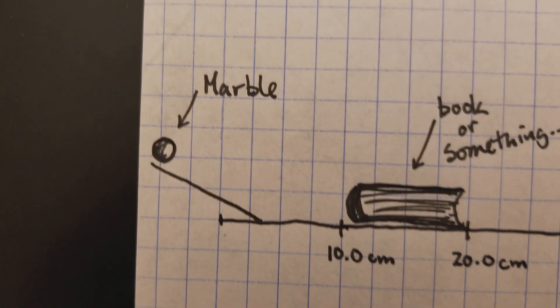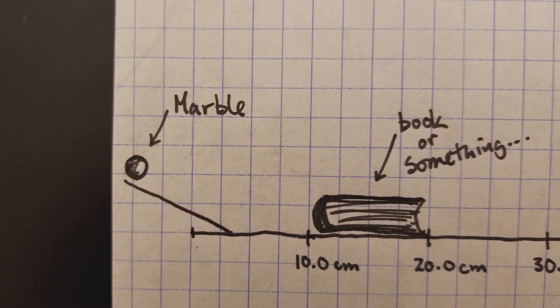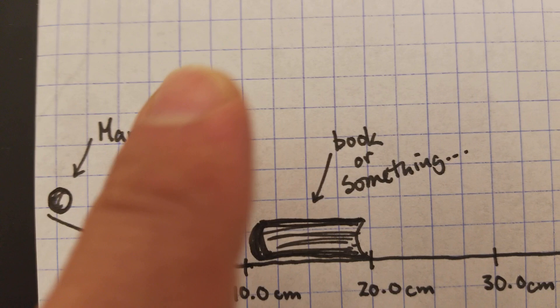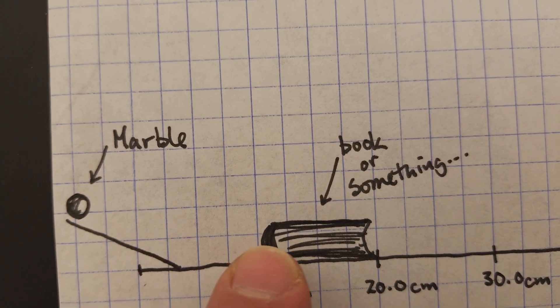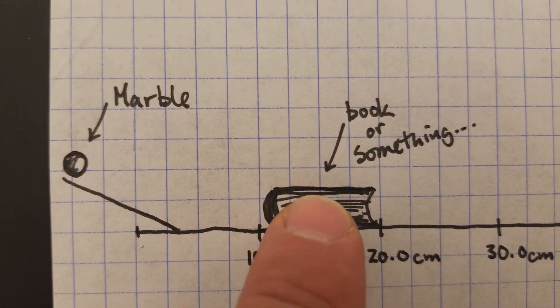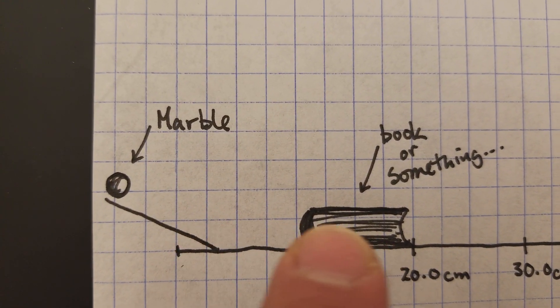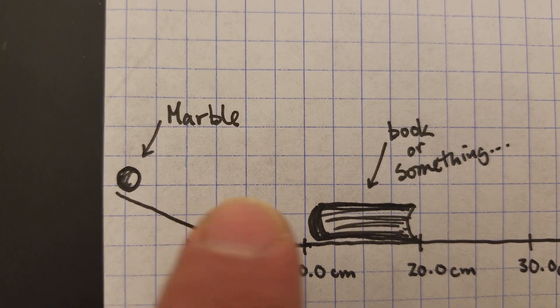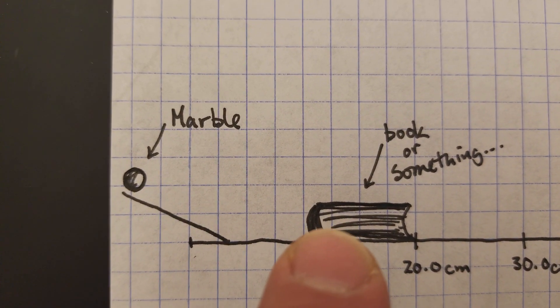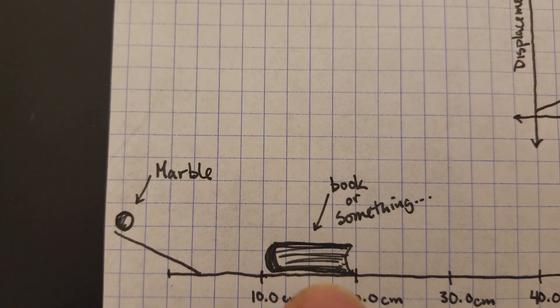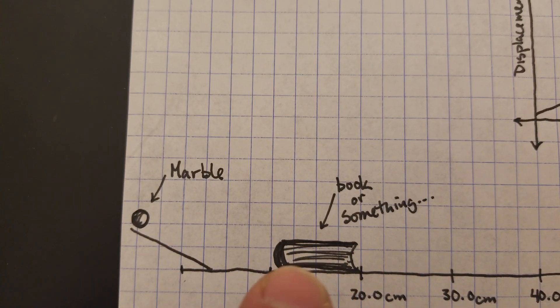Now the object that we're going to be looking at is a marble up on a ramp. So we're going to roll the marble down the ramp and from the bottom of the ramp to the point where it reaches some object, we're going to time that right in between there. So from the bottom of the ramp to the time it reaches the object. We'll put like a book or something else there so that when the marble hits it we can hear it and we can stop our timer.